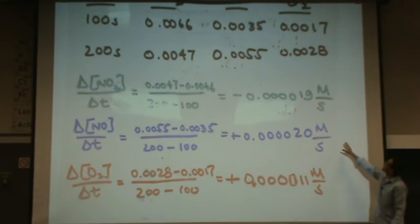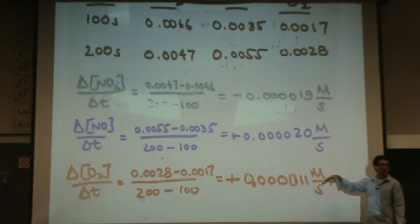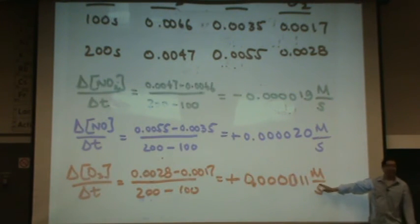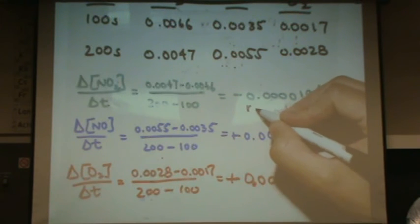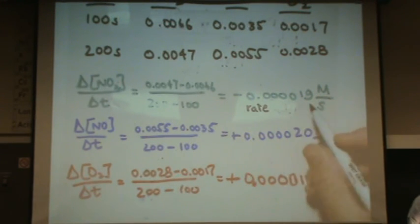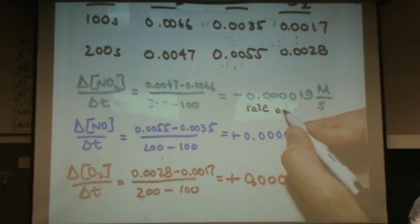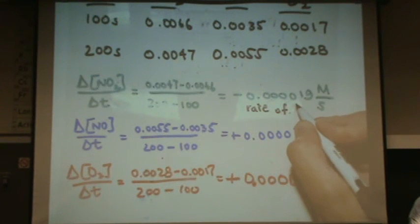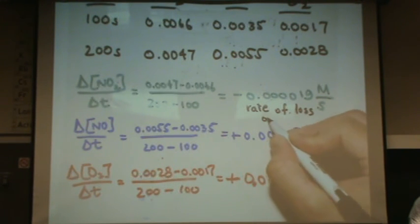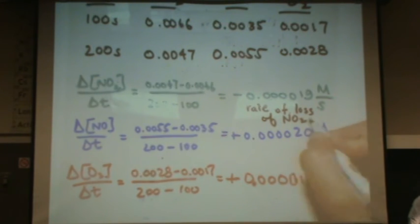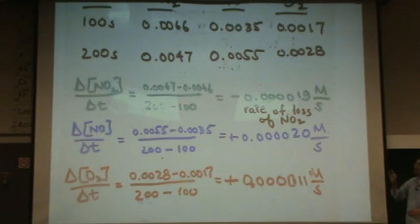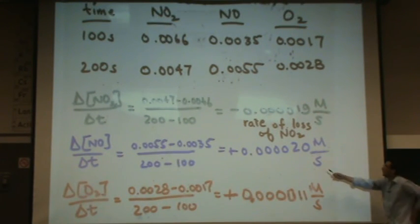Okay, notice that these numbers are not totally equal, especially the third one. It's not equal to the first two. So what do these numbers mean? The first one is the rate, and because you get a negative answer, of loss or disappearance of NO2. So the negative represents loss of NO2.